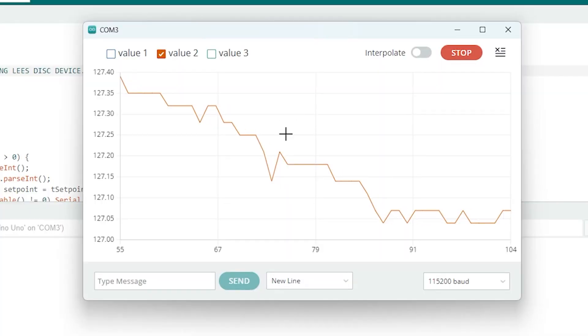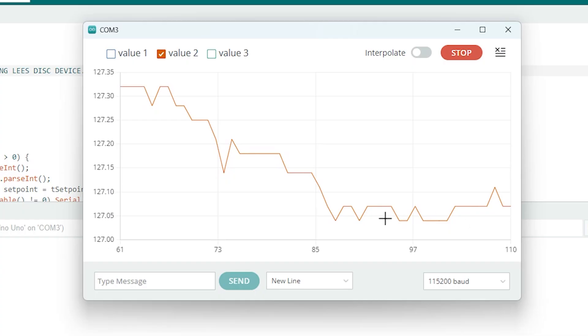The system has finally reached steady state after operating for about 30 minutes. This is the temperature of the top brass disk over time, and you can see it decreases a little bit, and then it's kind of leveled off, and then it will start increasing a little bit. It's sort of oscillating around this steady state value of around 127.15 degrees Celsius.